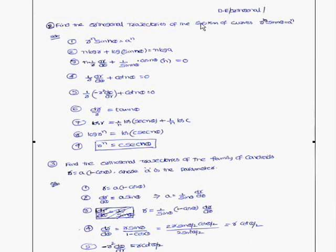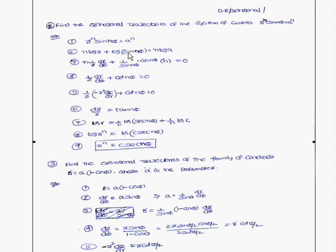Find the orthogonal trajectories of the curves r^n sin(nθ) = a^n. First step: write the equation r^n sin(nθ) = a^n, then apply logarithm to both sides to get n log r + log(sin nθ) = n log a. Differentiating: n(1/r)(dr/dθ) + (1/sin nθ)(cos nθ)(n) = 0. The parameter a has been eliminated, so no substitution is needed.